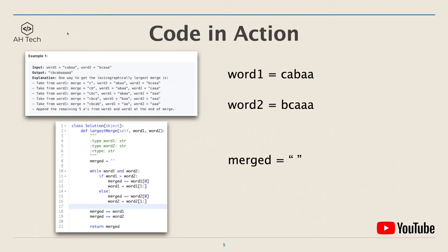Here we'll be looking at example one. Word one is 'cabaa' and word two is 'bcaa'. Starting from the first letter, c is bigger than b so we add c into merge and remove it from word one. Next, b is bigger than a so we add b into merge and remove it from word two. Then c is bigger than a so we add c into merge and remove it from word two.